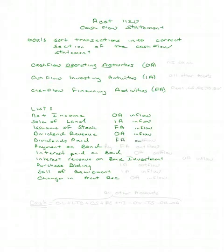Compare that to dividends paid. Dividends paid is a financing activity — you're paying your stockholders, and that would be an outflow. How about a payment on a bond payable? That's one of the ways that you finance yourself, so that's a financing activity and it's an outflow.